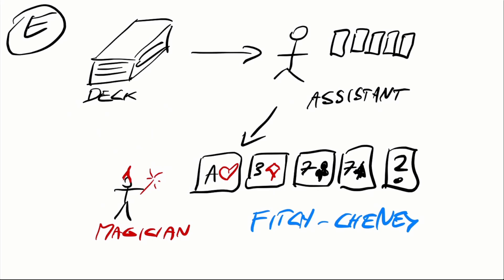In this problem we have a deck of cards and some volunteer from the audience shuffles the deck and selects five cards and gives these five cards to the magician's assistant. The assistant then looks at those five cards, hides one of them, and rearranges the other four into a sequence. At this point the entire thing is shown to the magician.